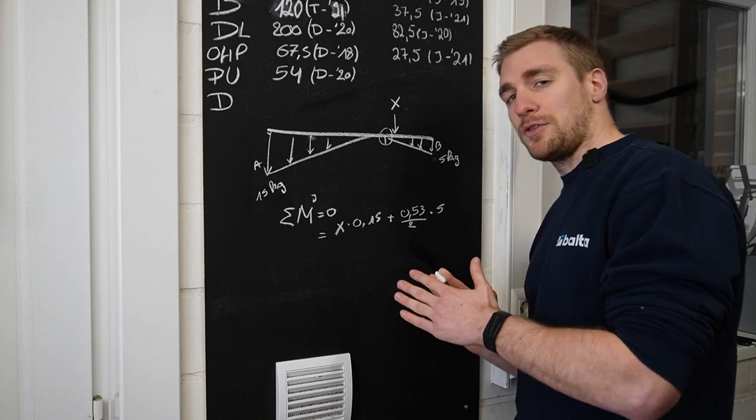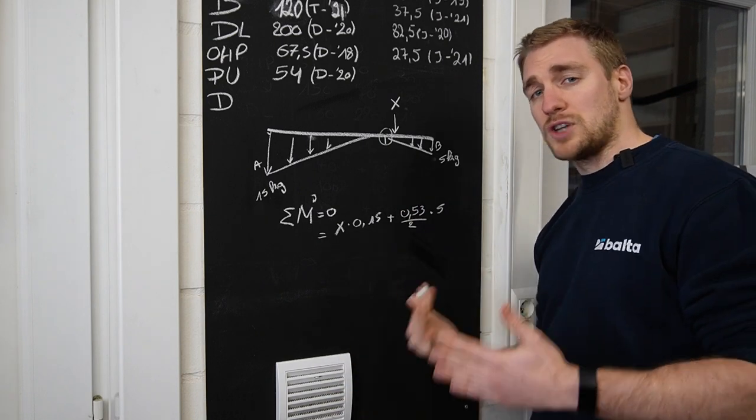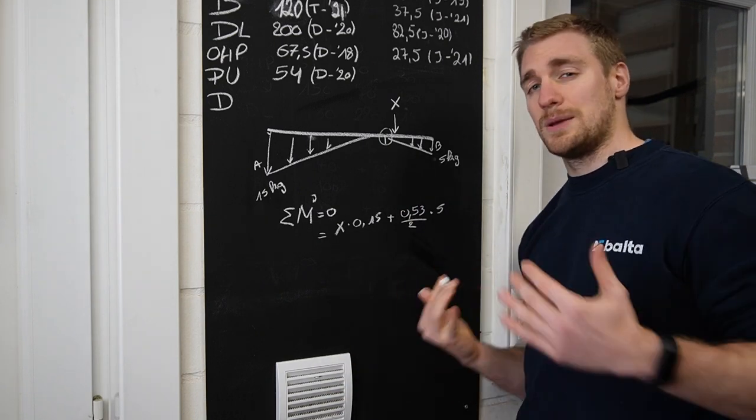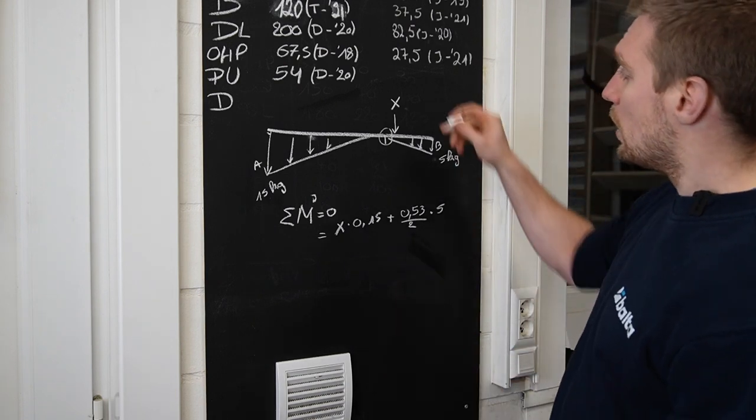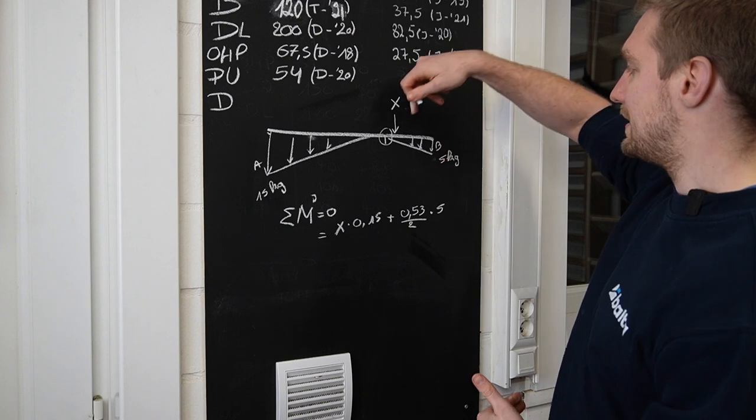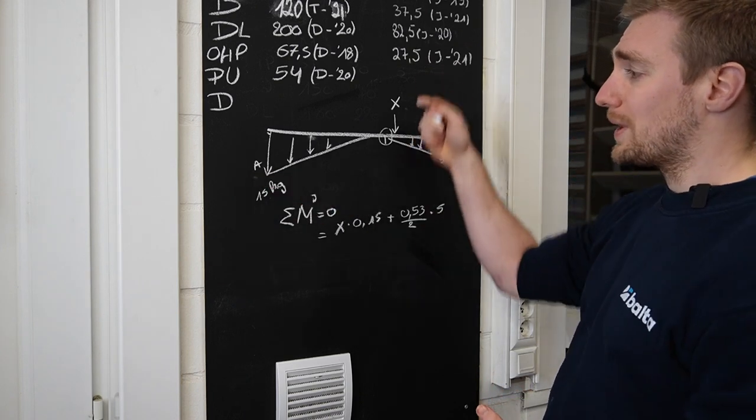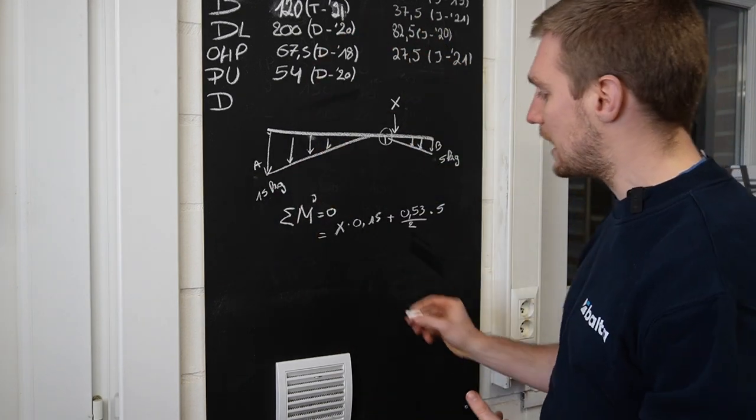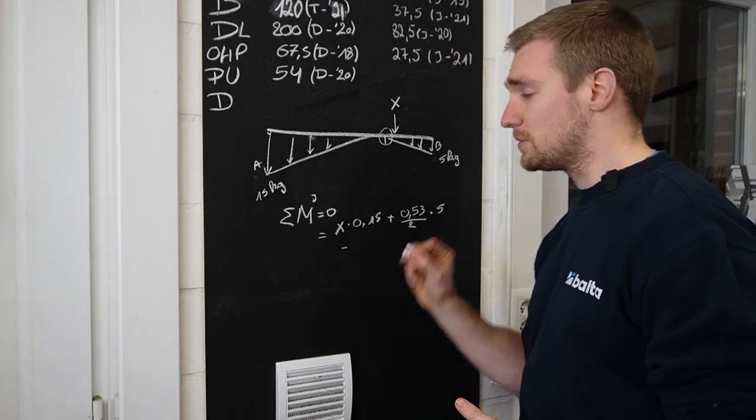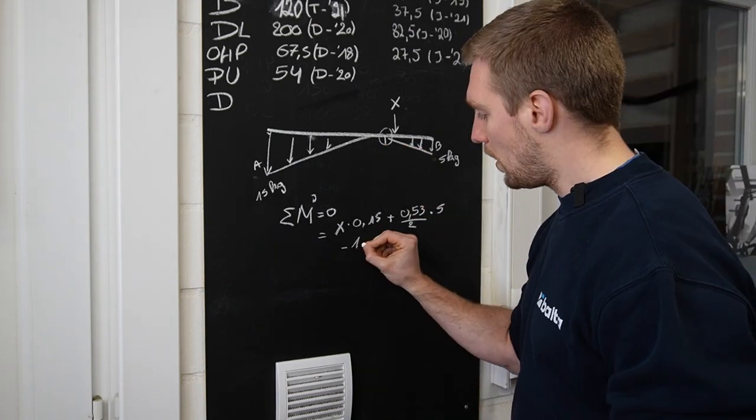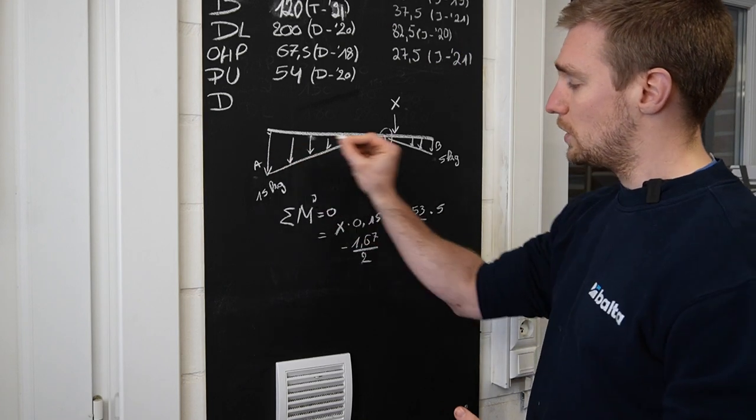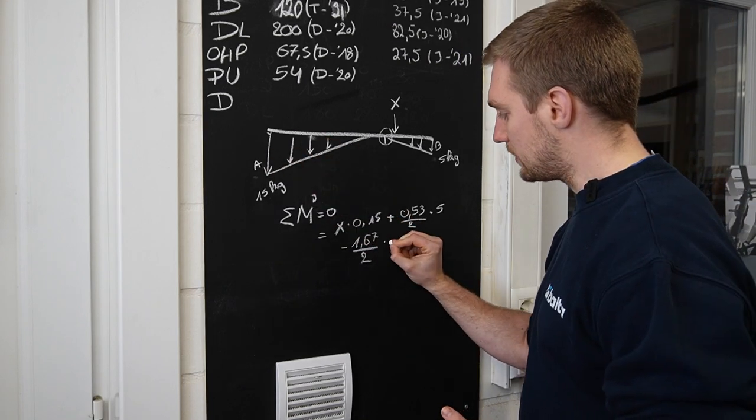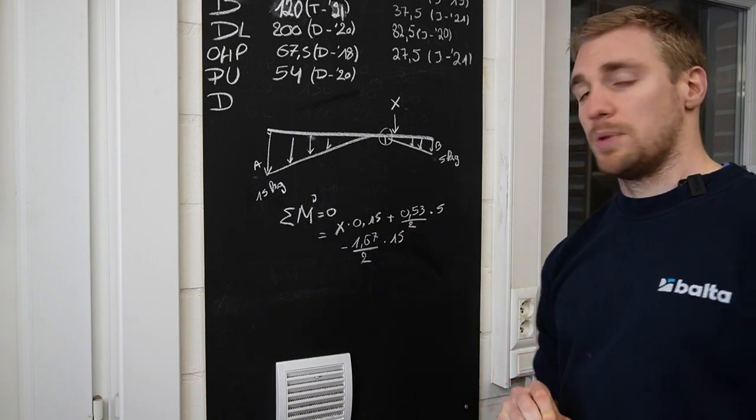So we are talking about forces and I'm talking about kilos because I just want to simplify this and keep it as clean as possible. Now we talked about forces going in this direction, but A is going into the opposite direction, so that's why we have to put in a minus before it. 1.67 meters divided by 2 because it's also a triangle, and then times 15. Boom.